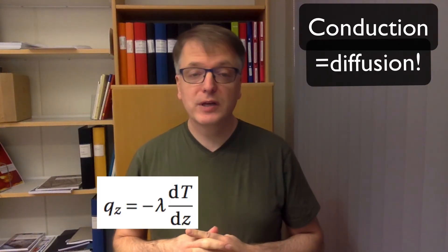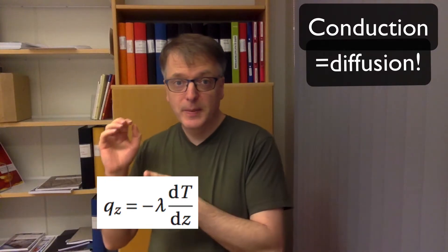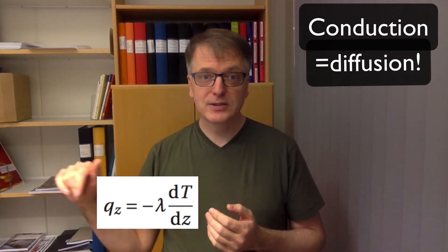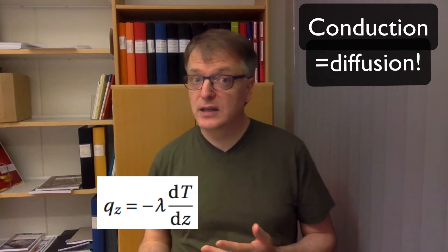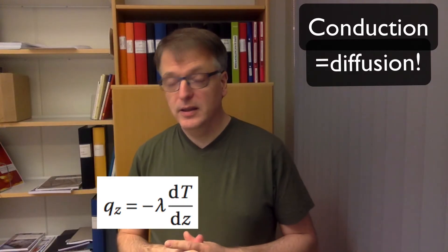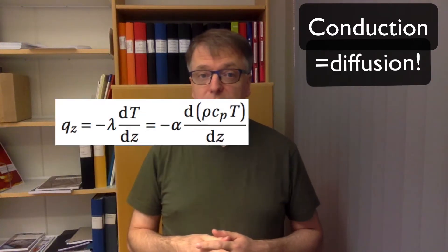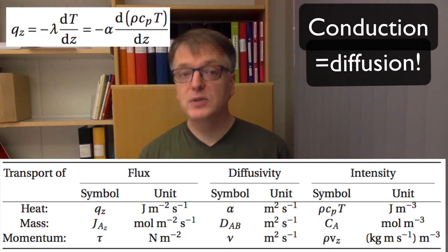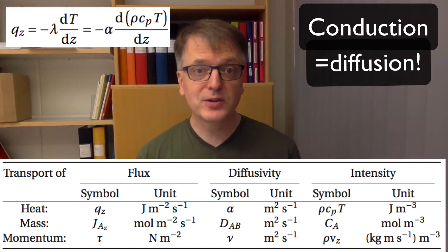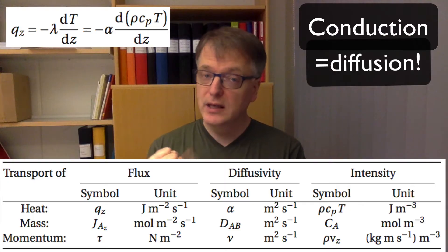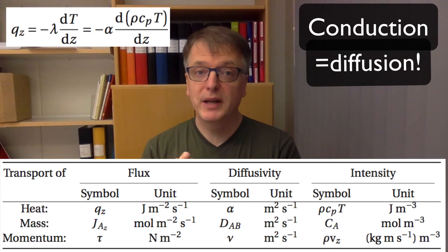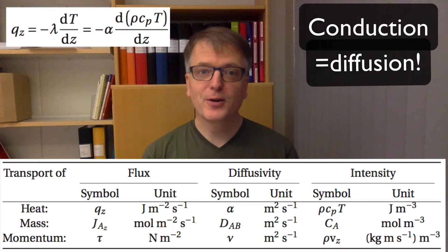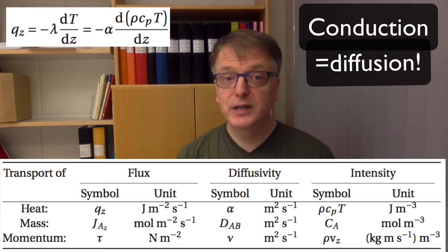We have Fourier's law for heat conduction, which states that the power transmitted per square meter of area is minus the conductivity times the temperature gradient. We can rephrase that using heat diffusivity instead, using alpha for heat diffusivity. Remember that diffusivities have the same units regardless of what's being transported: square meters per second for heat, mass, and momentum diffusivity. However, their values don't need to be the same — they are equal only for an ideal gas.